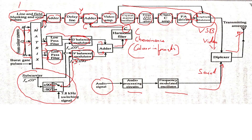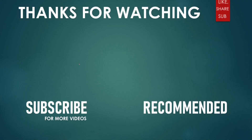The sound signal is a frequency-modulated signal in a separate sideband. Both the video signal and the FM sound signal are combined and transmitted through the transmitting antenna. This is how the PAL color TV transmitter works.